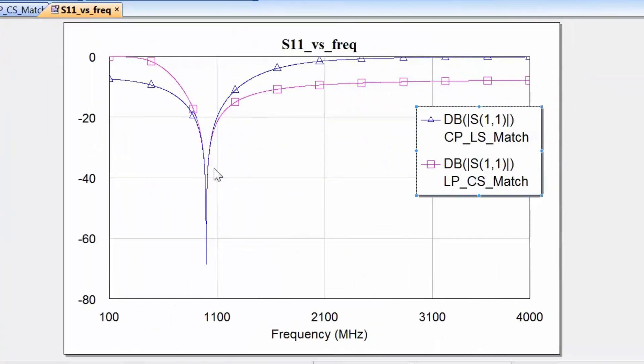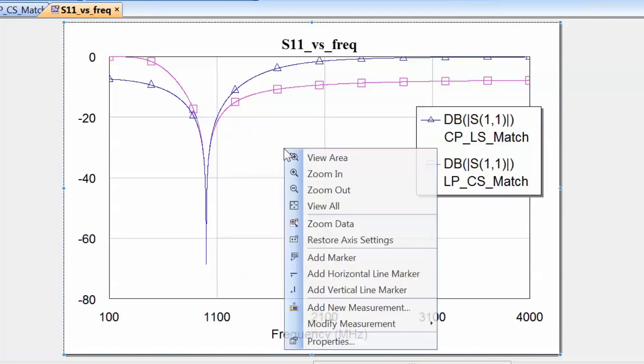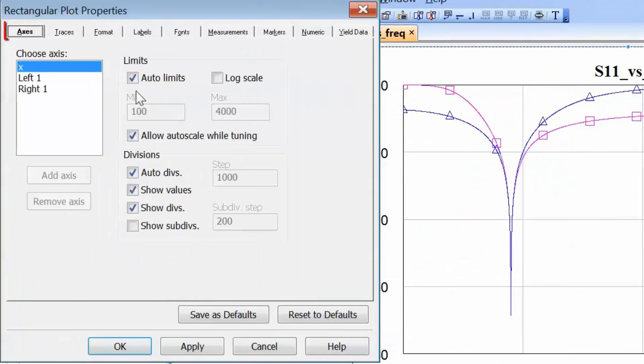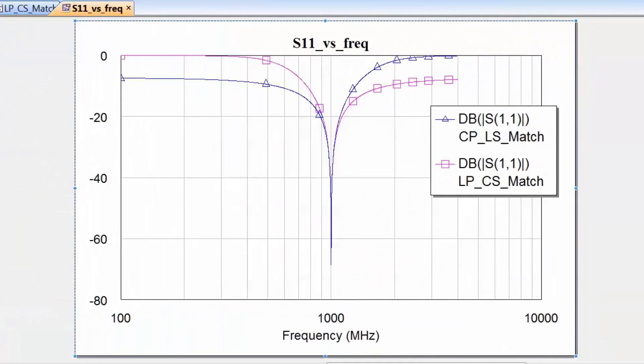So we can see now that we have a good match for both of the networks at the frequency of interest. In fact we can see this a bit more clearly if we change the scale on our x-axis to being logarithmic. So let's right click on the graph, go to properties and then choose log scale for the x-axis. Click on apply and then ok. Then you can see that at 1 GHz, which is the frequency of interest, we get a good match for both networks. We can see how good a match by pressing Ctrl M and inserting markers on both graphs.